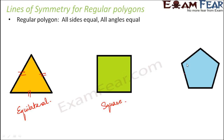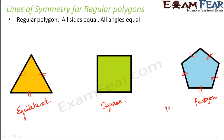Here you have five sides — one, two, three, four, five — and all the five sides are equal in length. So a polygon with five sides is called a pentagon. Since all the sides are equal in length, this is called a regular pentagon. So these are the three examples of regular polygons considered here.